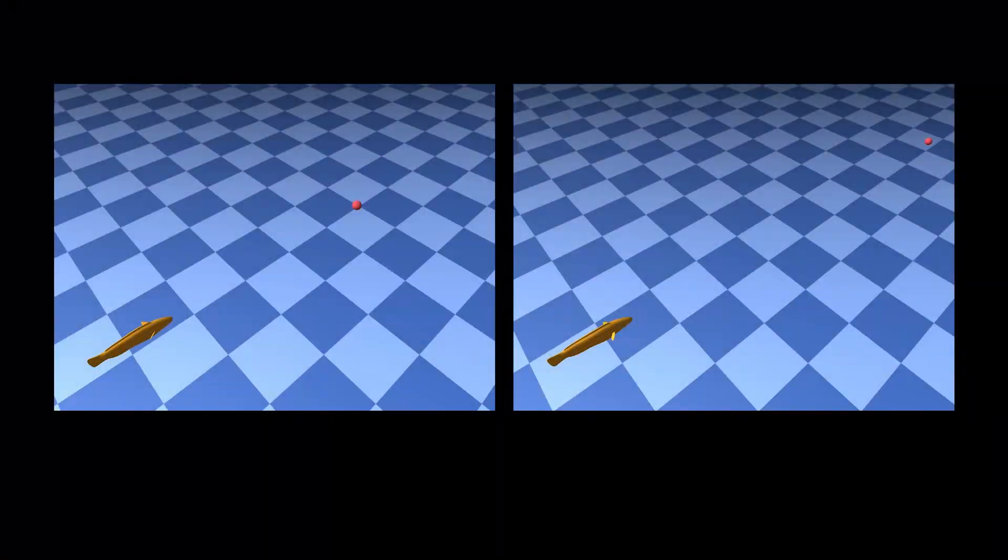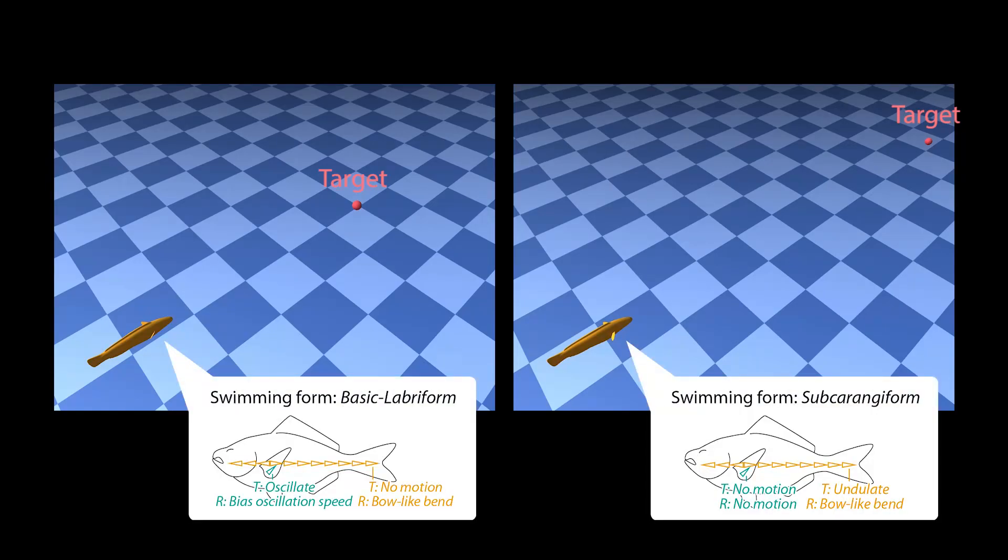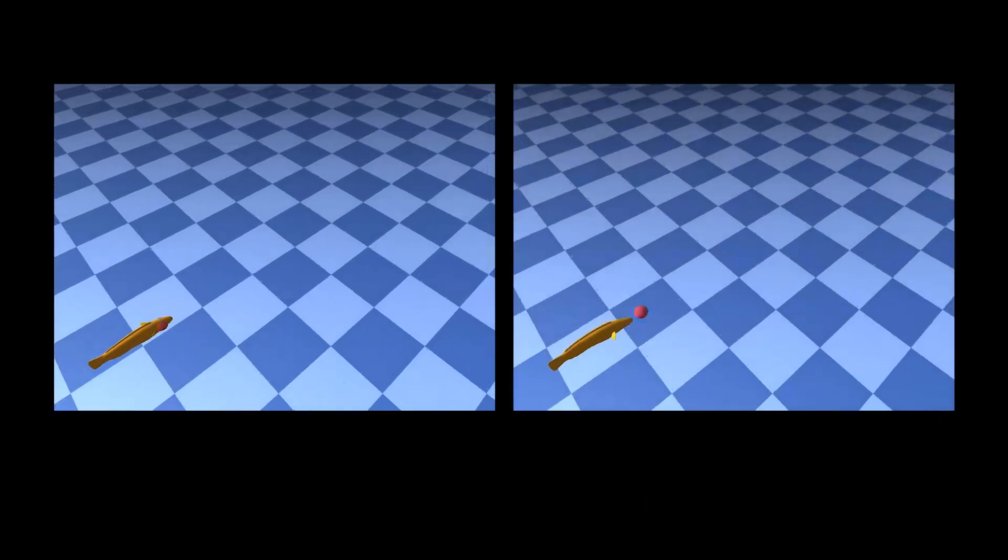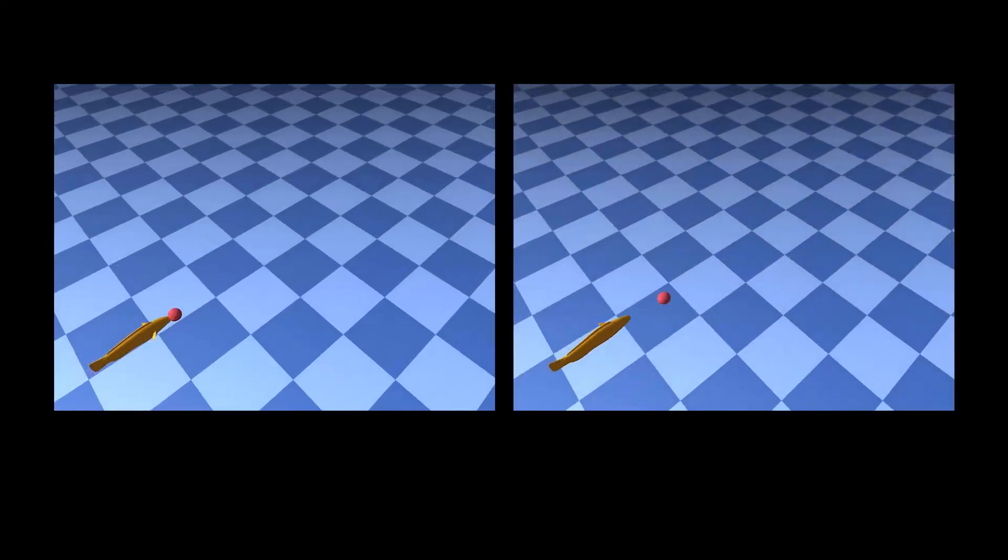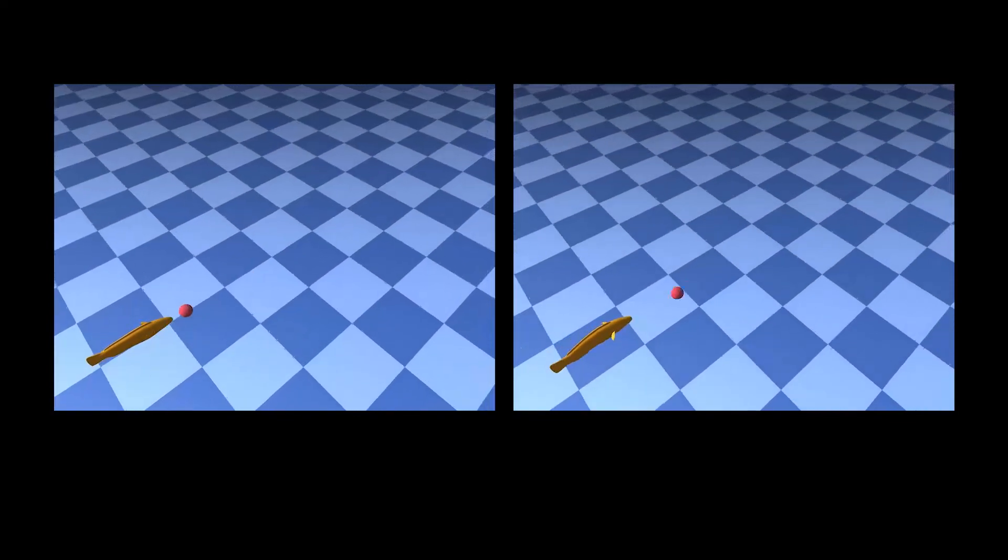Before the fish begins to swim, it decides where to swim at first and how to swim. The fish repeats this decision-making process to execute a series of its swimming motion.